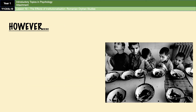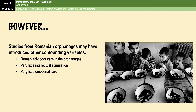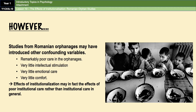That said, it is important to consider that the quality of care in Romanian orphanages was so poor — with children receiving very little emotional care or intellectual stimulation — that this in itself could have introduced different confounding variables. The harmful effects seen in Romanian orphan studies could therefore represent the effects of poor institutional care specifically, rather than institutional care in general. This provides a useful counterpoint for discussion questions.